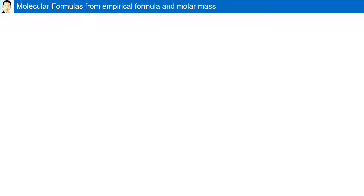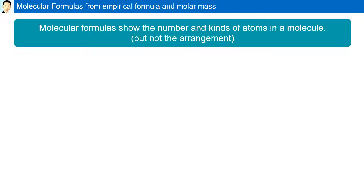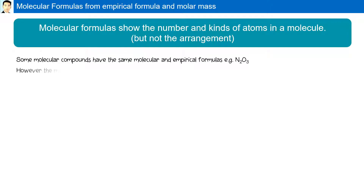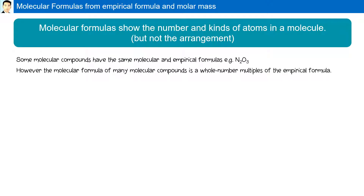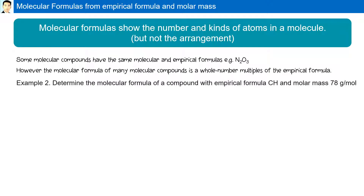Molecular formulas from empirical formula and molar mass. Molecular formulas show the number and kinds of atoms in a molecule, but not their arrangement. Some molecular compounds have the same molecular and empirical formulas, such as N2O3. However, the molecular formula of many compounds is a whole-number multiple of the empirical formula. For example, determine the molecular formula for a compound with empirical formula CH and a molar mass of 78 grams per mole.